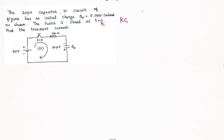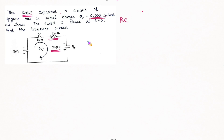The switch is closed at T equal to 0. In the circuit, there is a resistor and a 20uF capacitor. When the switch is closed, the capacitor has an initial charge equal to 0.0001 C. In this problem, we need to find the transient current I of T.